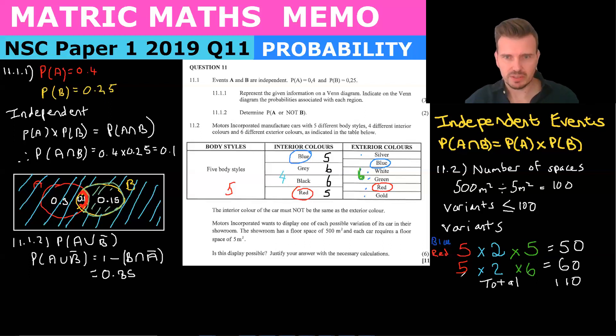I'm going to just make a note here, these were the gray and the black. So I have 110 different variants. Therefore not possible because the number of variants, 110, is greater than 100.